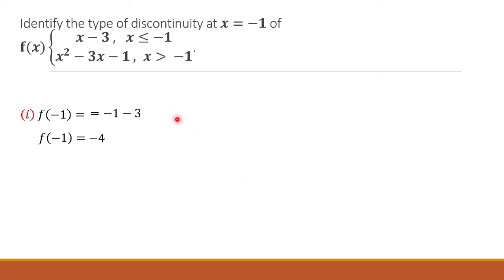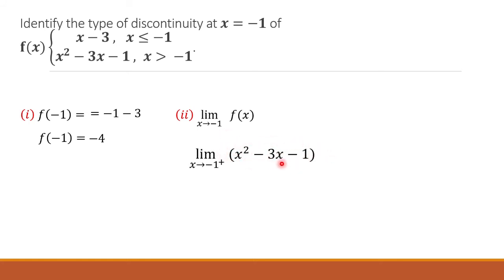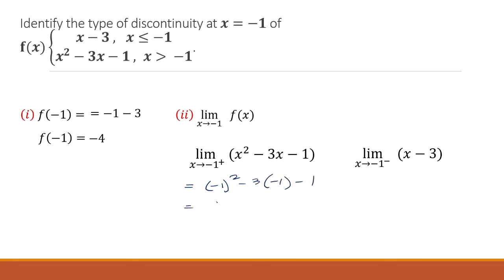Now let us identify the limit as x approaches negative 1. For the right-hand limit, we use x squared minus 3x minus 1, and for the left-hand limit, we use x minus 3. By direct substitution, the right-hand limit gives negative 1 squared minus 3 times negative 1 minus 1, which is 1 plus 3 minus 1, equaling 3. The left-hand limit gives negative 1 minus 3, which equals negative 4.